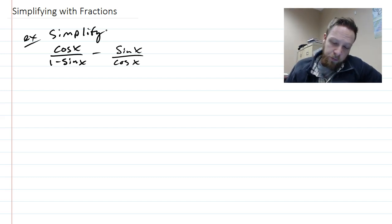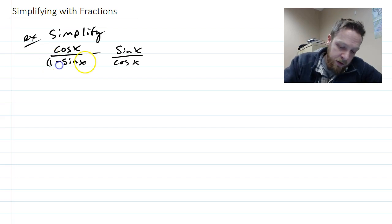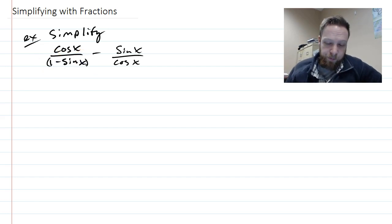So in this case right here, what we need to do is find a common denominator. So this is going to be like rational expressions. On this side you have a chunk, one minus sine x, it's a binomial.